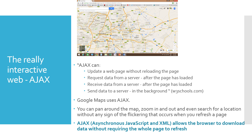Ajax can also send data to the server in the background. Google Maps uses Ajax — you can pan around the map, zoom in and out, and search for a location without any flickering when the page refreshes. Ajax stands for Asynchronous JavaScript and XML, and it allows the browser to download data without requiring the whole page to refresh.